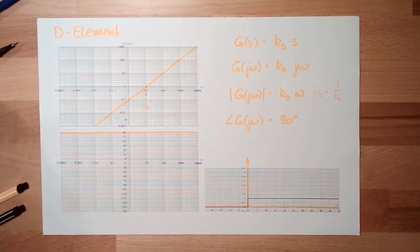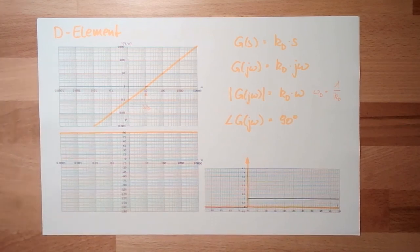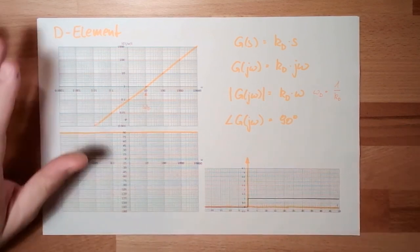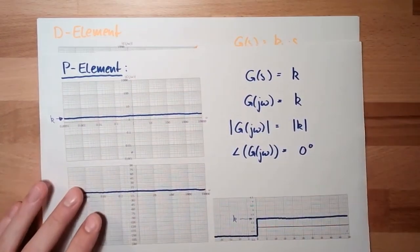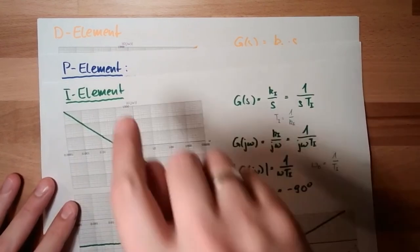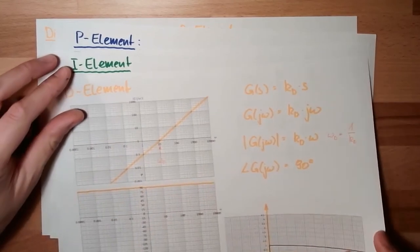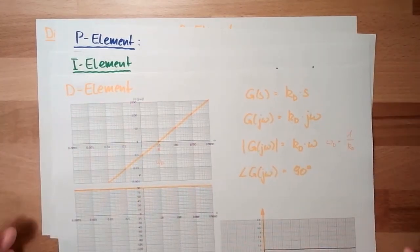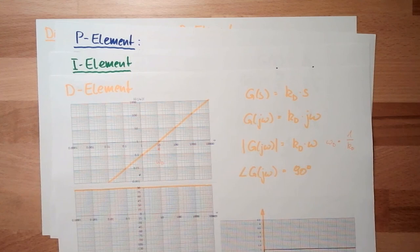The next thing we are going to talk about is a delay element. So this is an element which will dampen a little bit the things which will happen. These things we talked about, so the proportional element, the integrational element, and the differential element, they are all, let's say, pure somehow. But in reality, we always have some sort of energy storage inside a system.